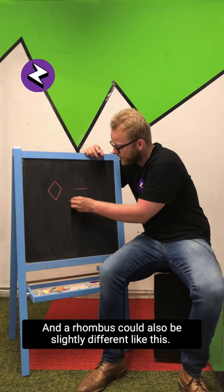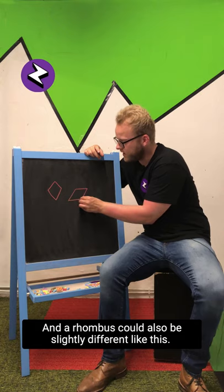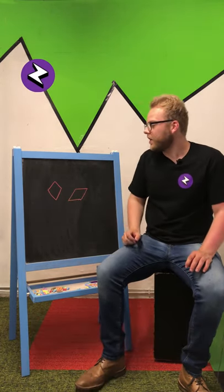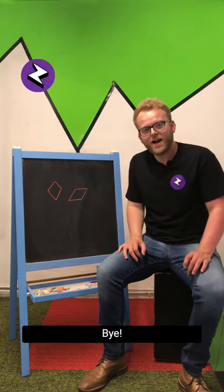A rhombus could also be slightly different like that, because it's four-sided but they're all the same length. So use this information, play around yourself, and we'll see you next one. Bye!